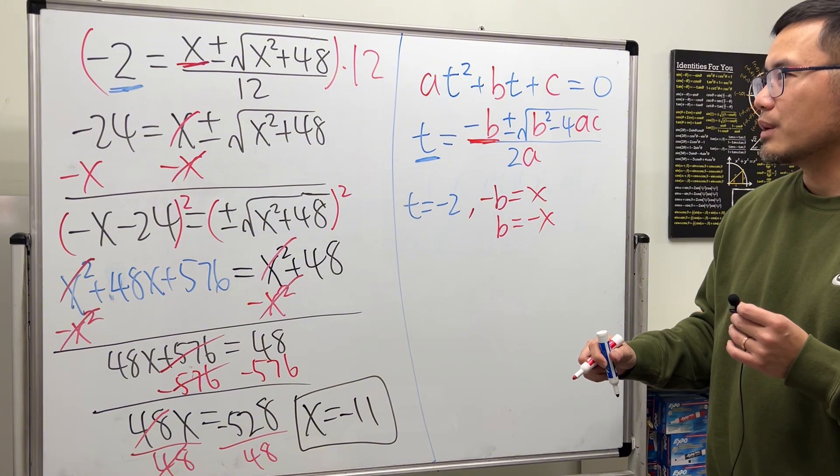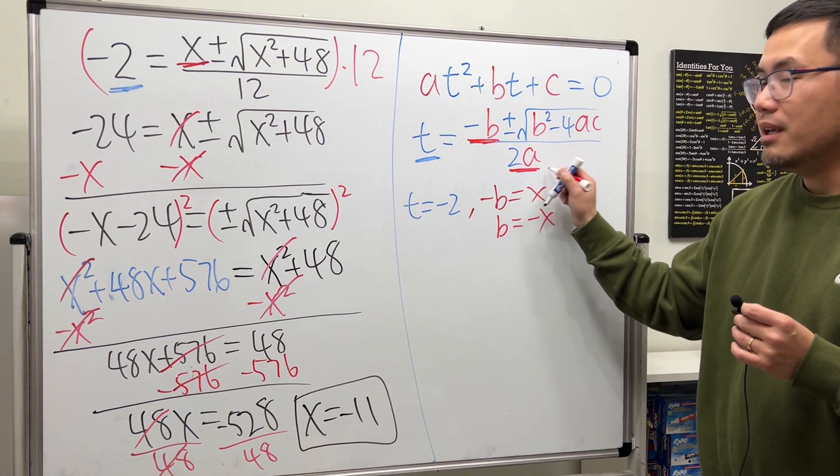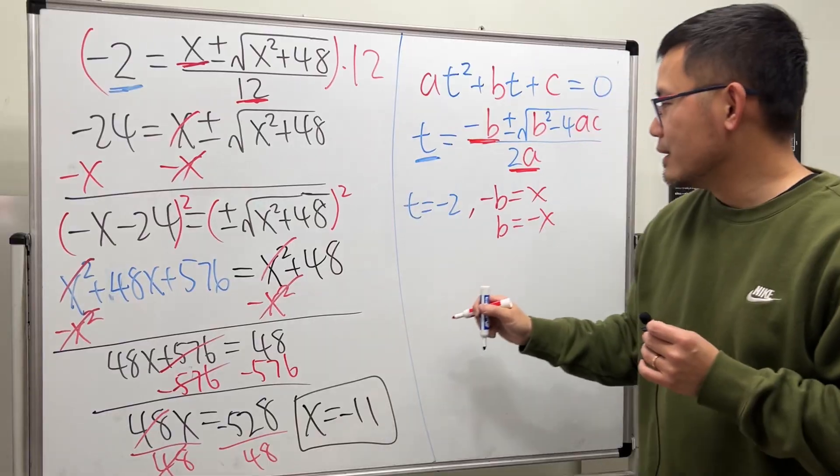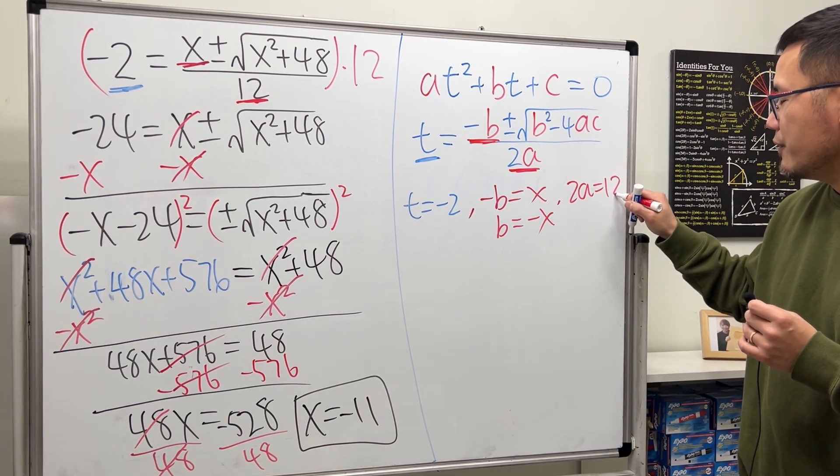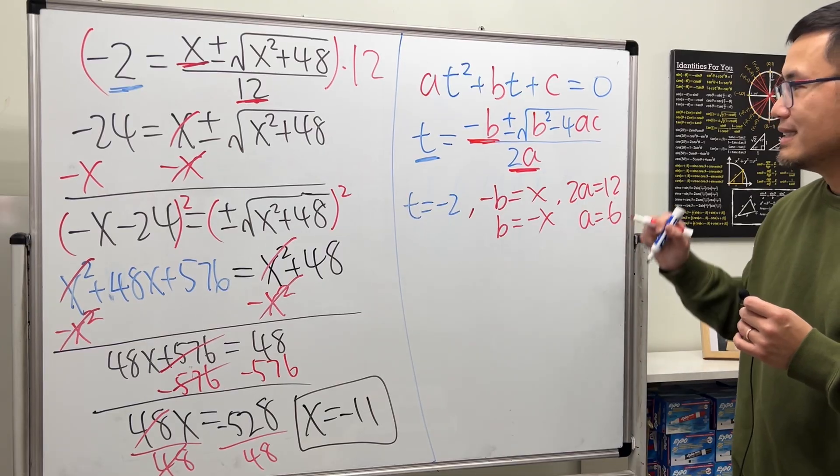And then, what else can we say? Well, here, we have 2a. 2a matches with the 12. So, we can say 2a equals 12. That implies a is equal to 6.